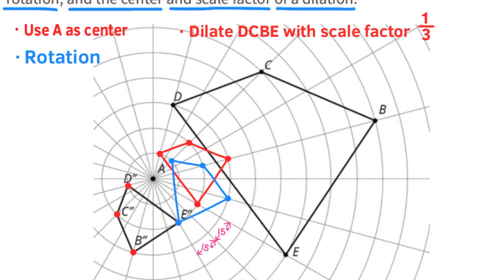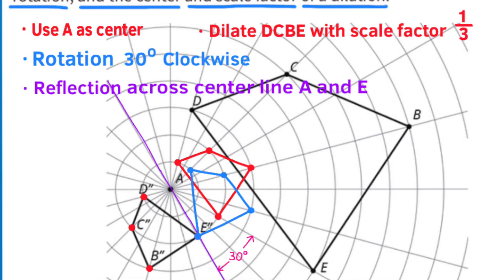Each of those units is worth 15 degrees, so the reality is it was a 30-degree clockwise rotation. With this rotation we've created a reflection across center line A and E prime.